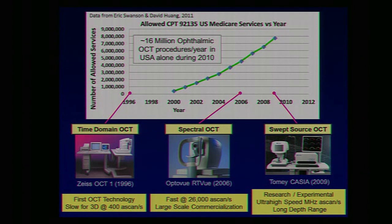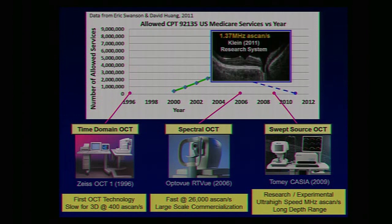The first OCT systems used time domain detection, but it was rather slow at only 400 A scans per second, making it hard to get three-dimensional volumes. In 2006, spectral domain techniques were commercialized — a much faster technique at 26,000 axial scans per second, and now widely commercialized with multiple companies competing. Swept source is a less commercialized, more experimental technology known for the fastest speeds, with ultra-high speeds at megahertz A scan rates — such as Robert Hooper's group at 1.37 megahertz.